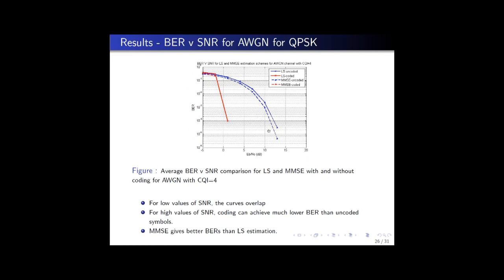Let us look at the performance criteria that was being used for the various estimation techniques. One of the major performance criteria of an estimation technique is the average bit error rate. In this plot we show a comparison of BER plotted against SNR for 4 different estimation schemes: least squares uncoded, coded, and MMSE uncoded and coded.